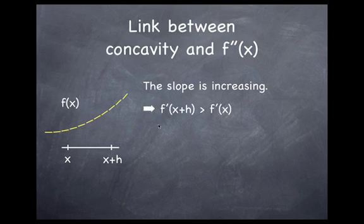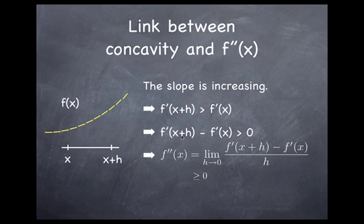So let's do that. If we evaluate f' at x plus h, then we know its value has to be larger than at x, provided h is positive, and then we can take the difference and show that that must be positive. Now when we divide this by h and take a limit as h goes to zero, we get the definition of the second derivative of f.